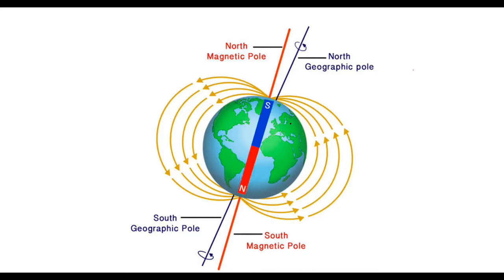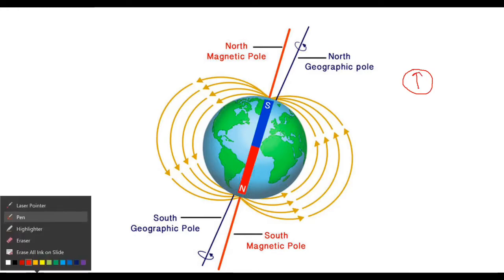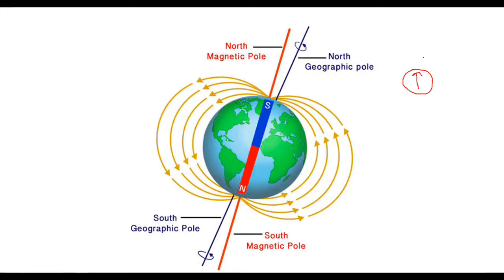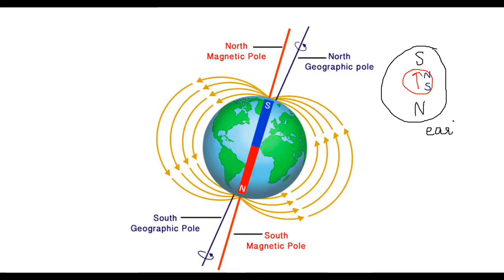Why does the needle of a compass point towards the geographic north pole? This is because the needle of the compass is made up of a magnet. The pointer of the needle is the north pole of the magnet, and the geographic north pole has the south pole of Earth's magnet — so attraction occurs between the unlike poles. On the other hand, the opposite side of the compass always points towards the geographic south pole, because in reality that is the magnetic north pole of the Earth.